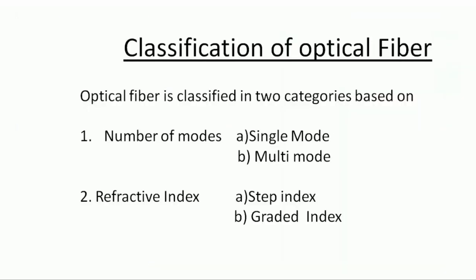Optical fiber can be classified in two categories. Based on the number of modes, it can be classified as single-mode fiber and multi-mode fiber. Mode means the distribution of light energy across the fiber. Depending on the refractive index, it can be classified as step index fiber and graded index fiber.